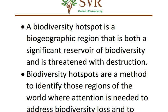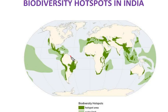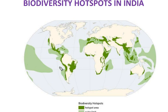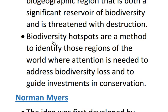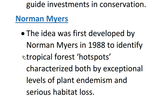Looking back at the image, the Amazon forest area is not classified as a biodiversity hotspot because it is not facing threat of destruction — it still has maximum biodiversity. The main objective of classifying biodiversity hotspots is to identify those regions of the world where global attention is needed to address biodiversity loss and to get investment into biodiversity conservation.